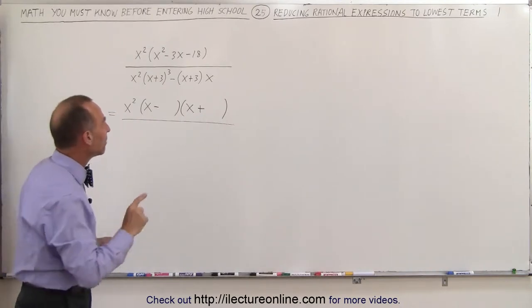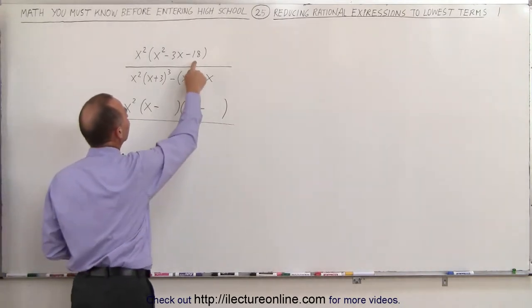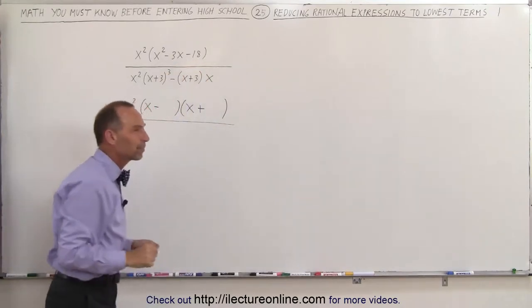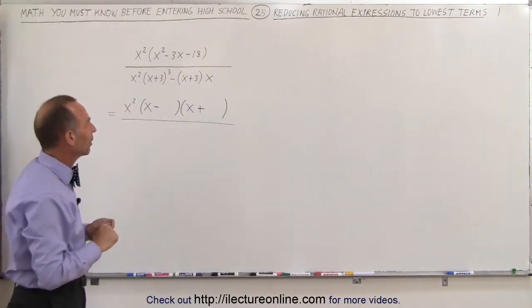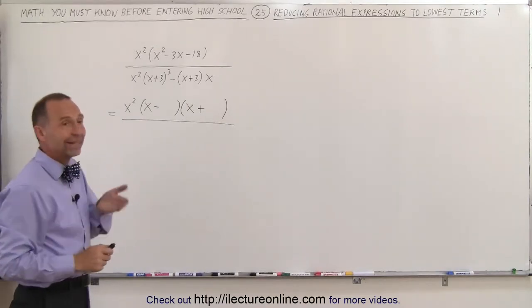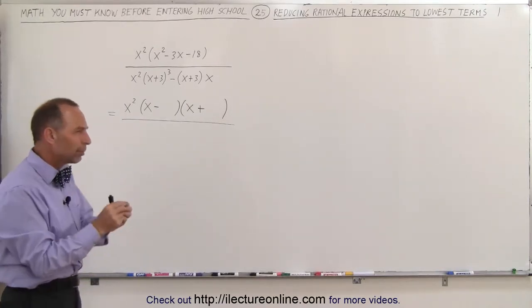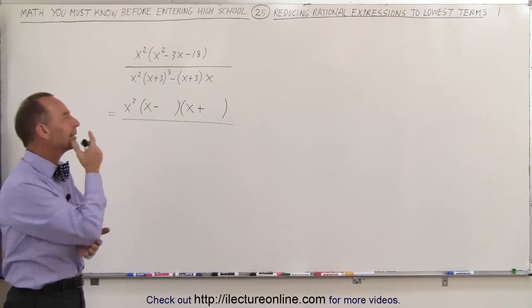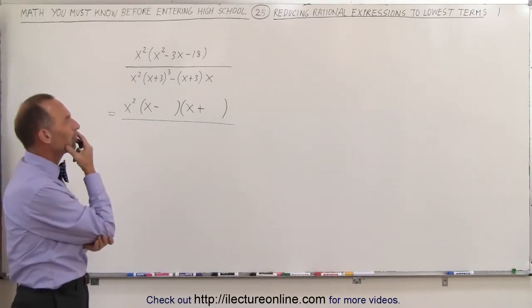So now we're looking for two numbers. When I multiply them together, I get a negative 18, and when I add them together, I get a negative 3. That means the numbers are 3 apart from one another like 5 and 8, or 6 and 9, or 7 and 10, and so forth. But when I multiply, I get 18. When I add, I get 3.